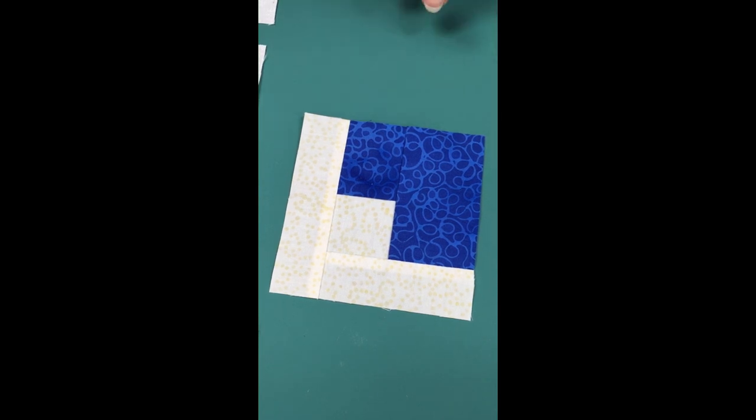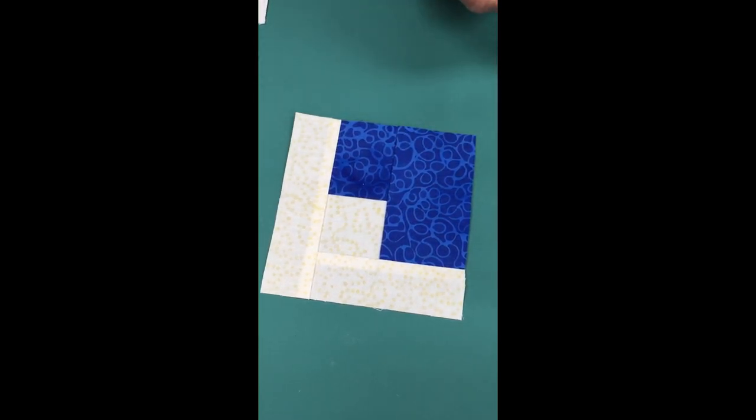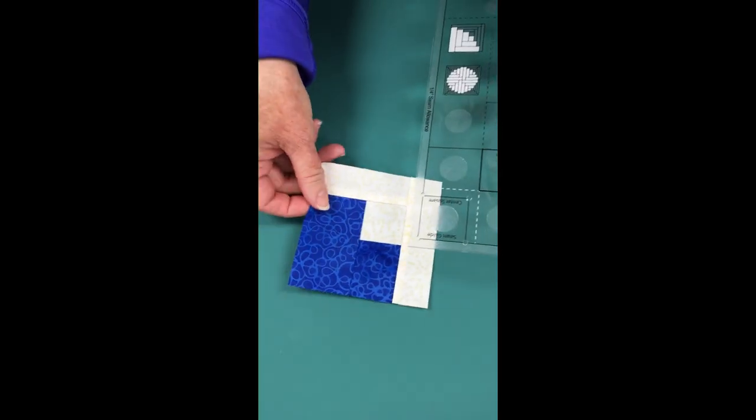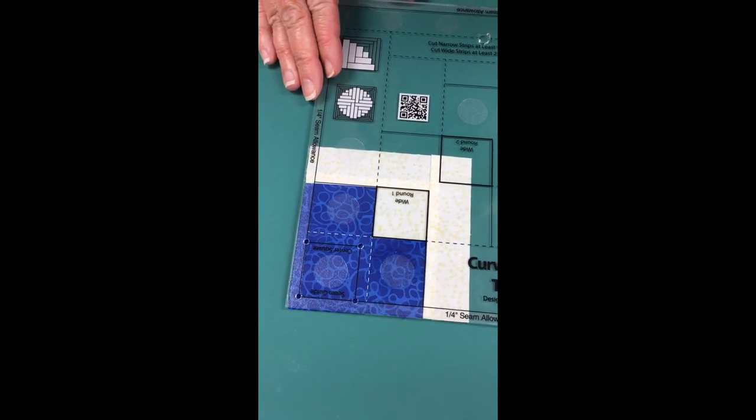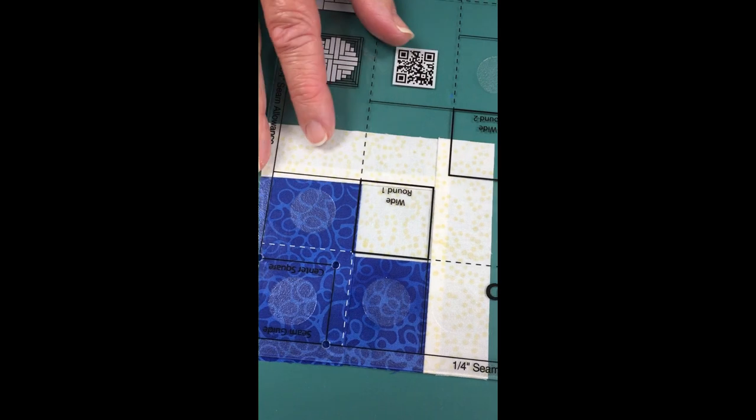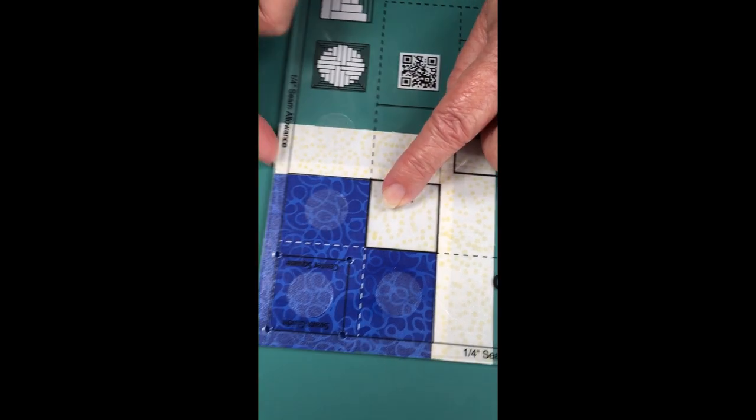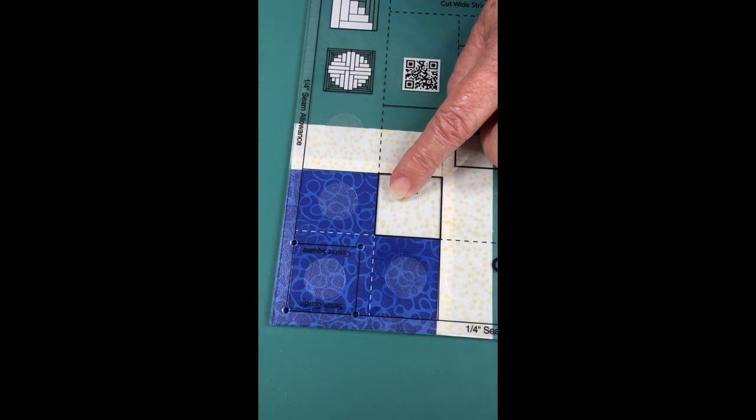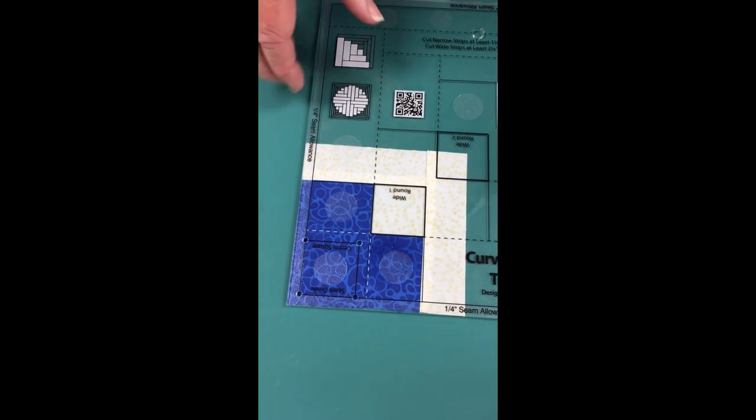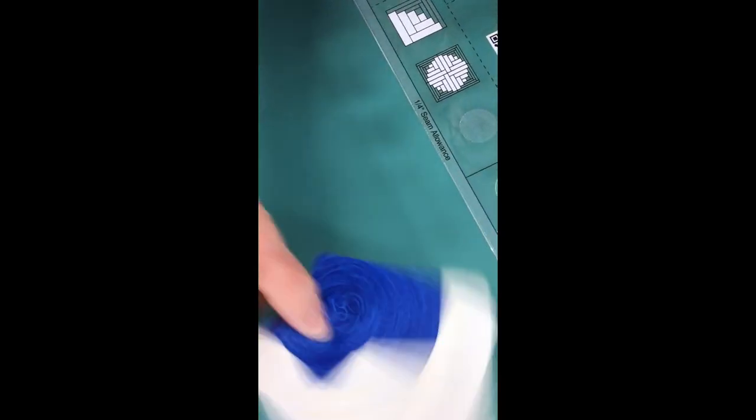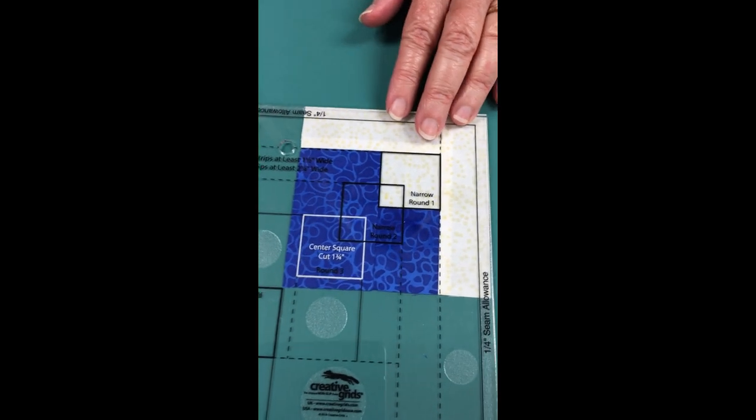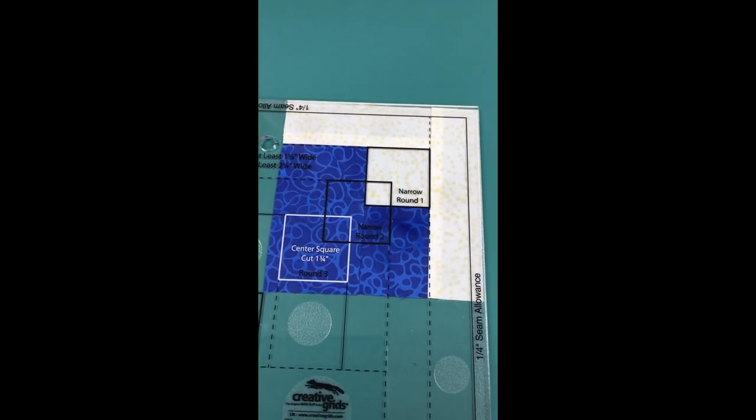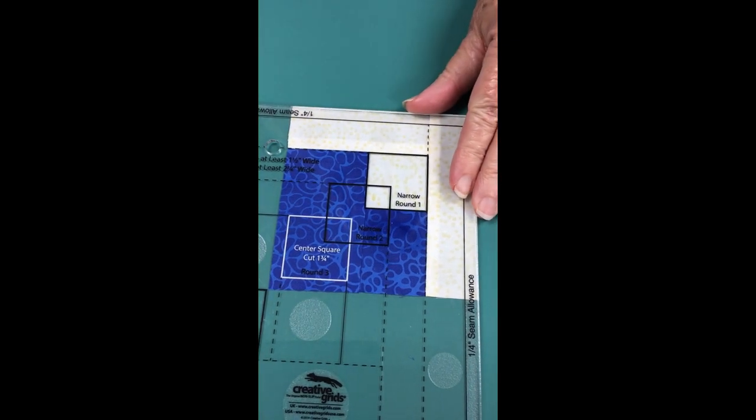The ruler is designed so you can trim after each round. To trim my wide round, I lay the wide round one marking on my center square and trim there and there. It's handy to have a rotating cutting mat because I flip my block, look for the narrow round one marking, line that up on my center square, and trim there and there.